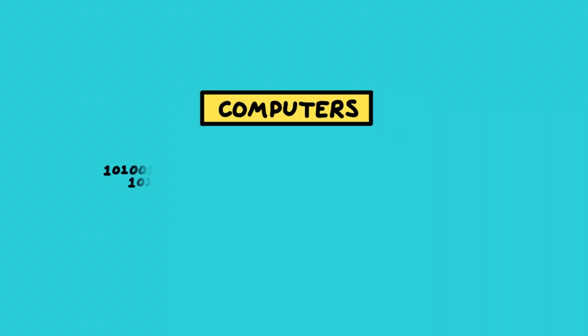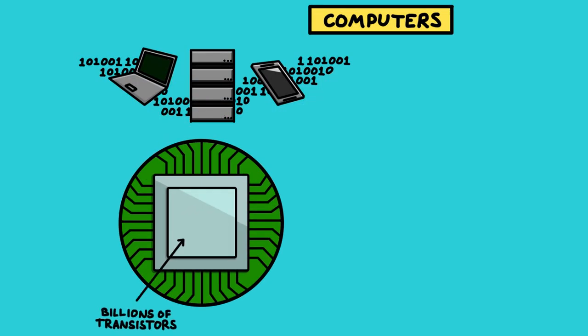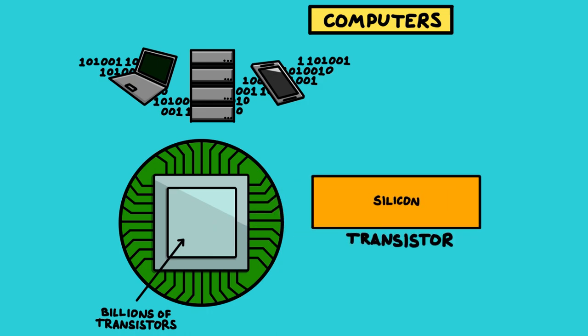Number one on the list is the entire basis of the modern world: computers. Computers wouldn't exist if it wasn't for our understanding of quantum physics. The basic element of a computer is the transistor, which is a tiny switch with no moving parts. This has allowed us to miniaturize it and have billions of them on a single chip, all switching a billion times per second. Transistors use the special electronic properties of silicon, which is a semiconductor, and the rules of semiconductors are dictated by quantum physics.